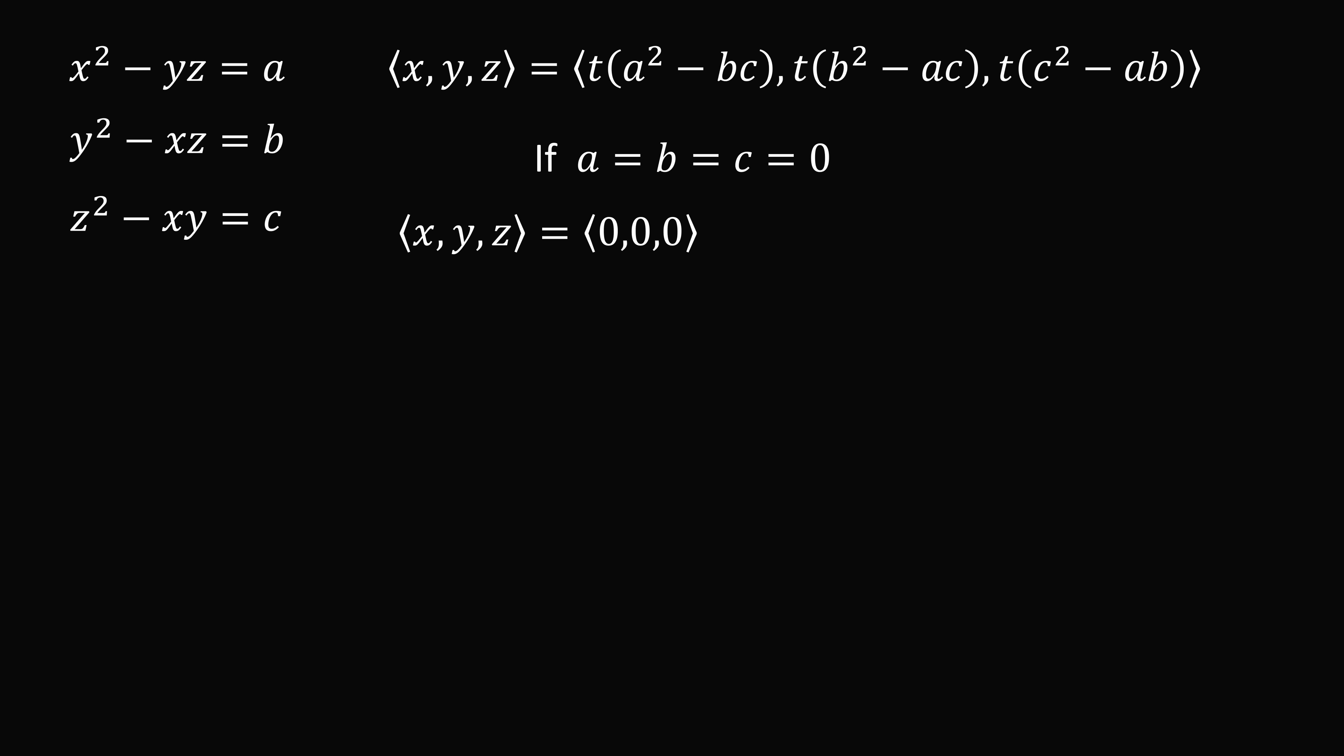Suppose, instead, that not all of them are equal to zero. In this case, let's just suppose that a is not equal to zero. It'll work out similarly if b is not equal to zero or c is not equal to zero. You just take those particular equations. We'll just suppose that a is not equal to zero. Now, we're going to substitute this form of x, y, z into the first equation so that we can solve for t.